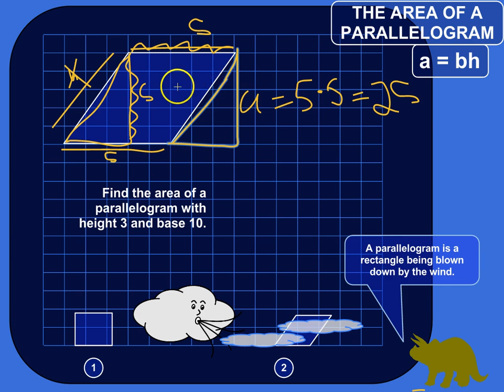So the height would be, or the rectangle would be, this: 1, 2, 3, 4, 5. The distance between the two bases.